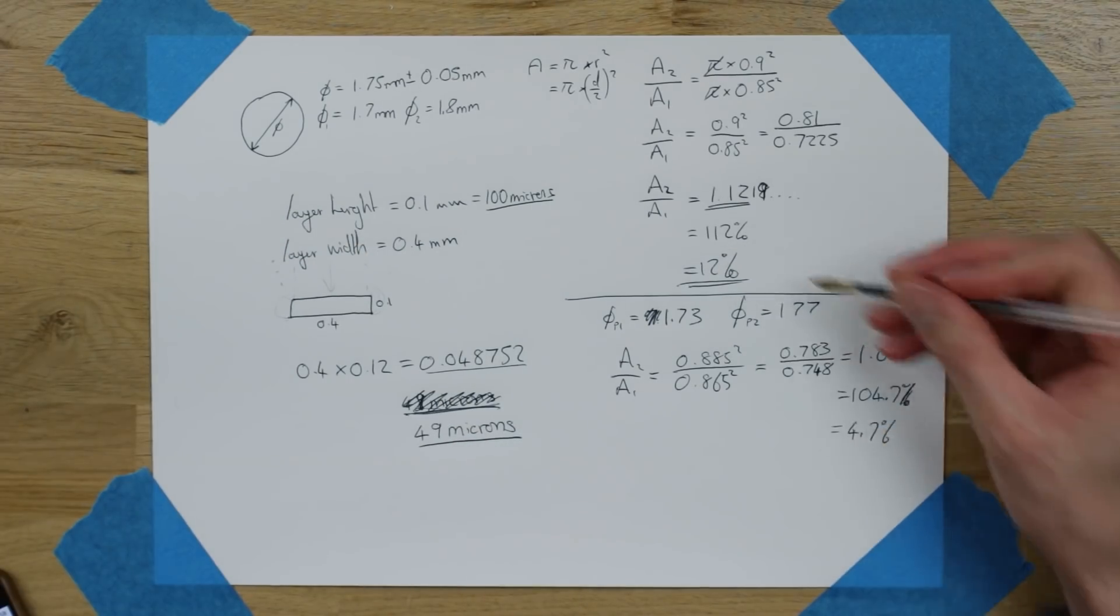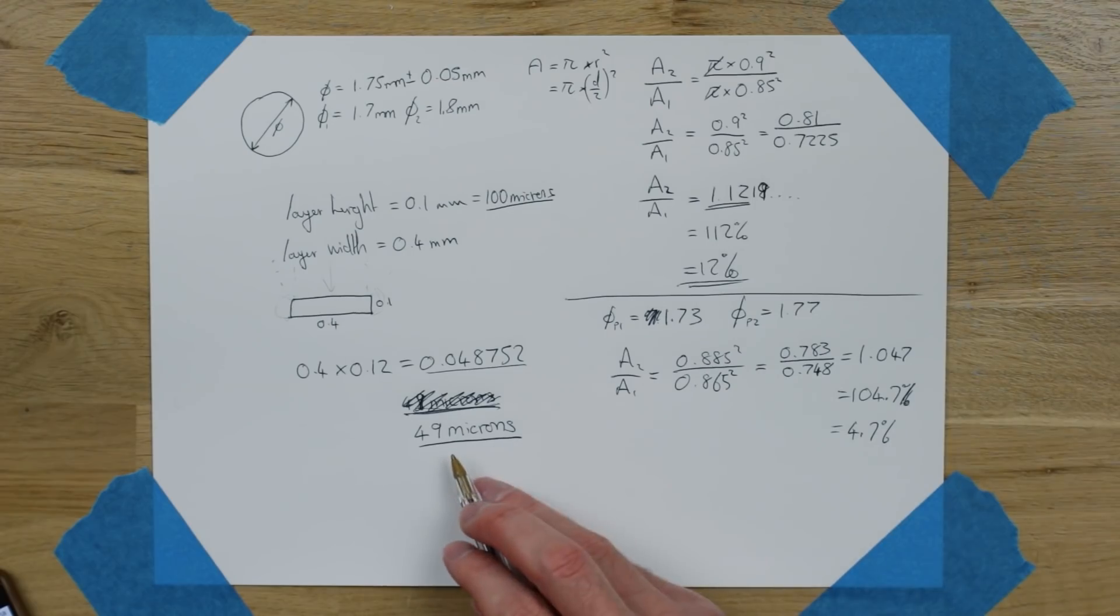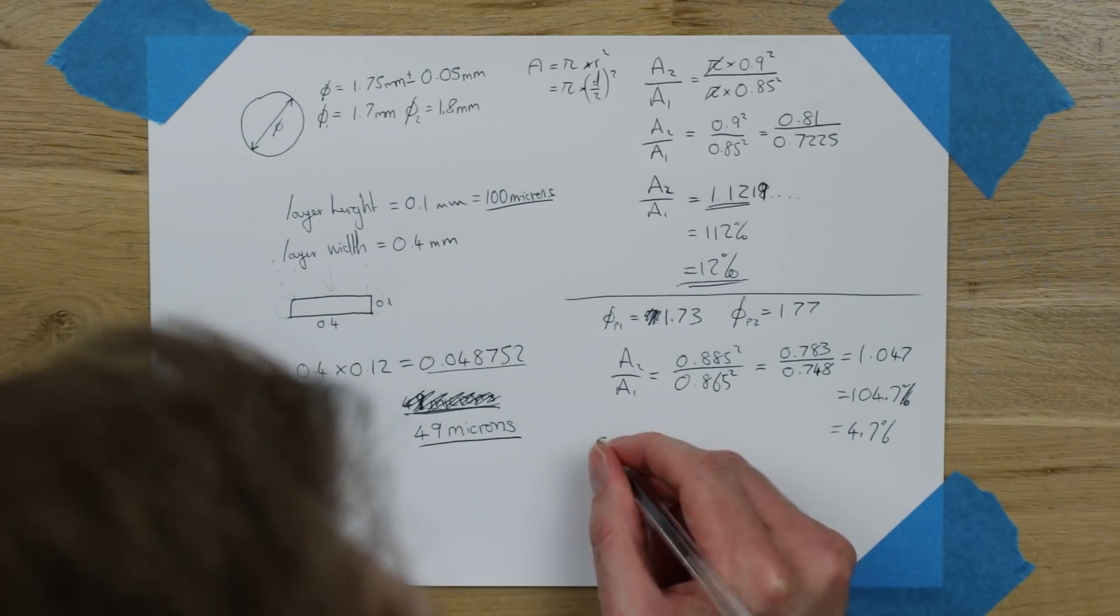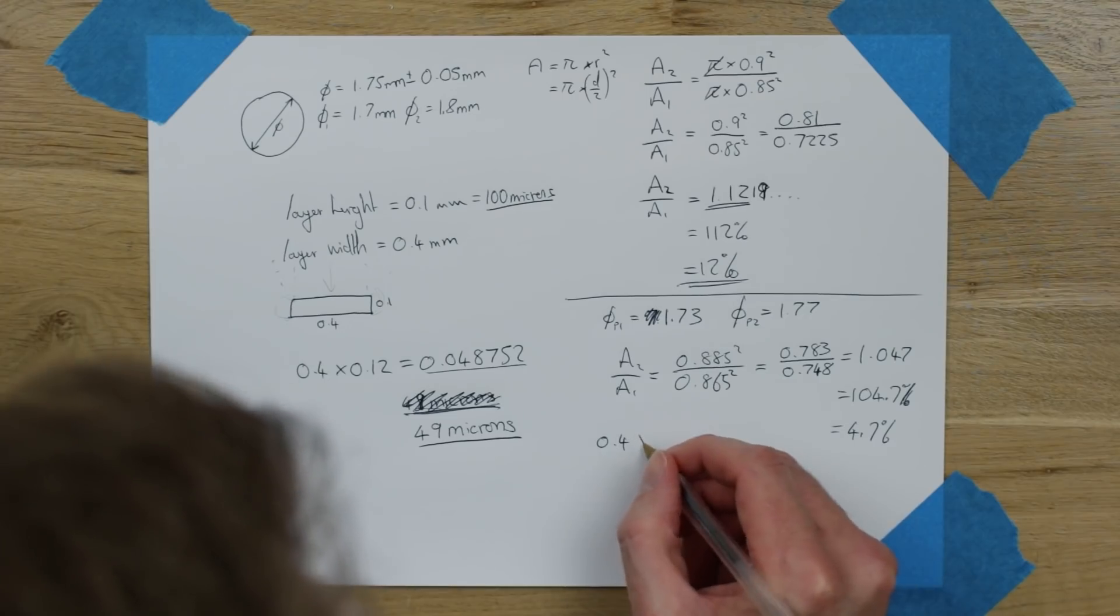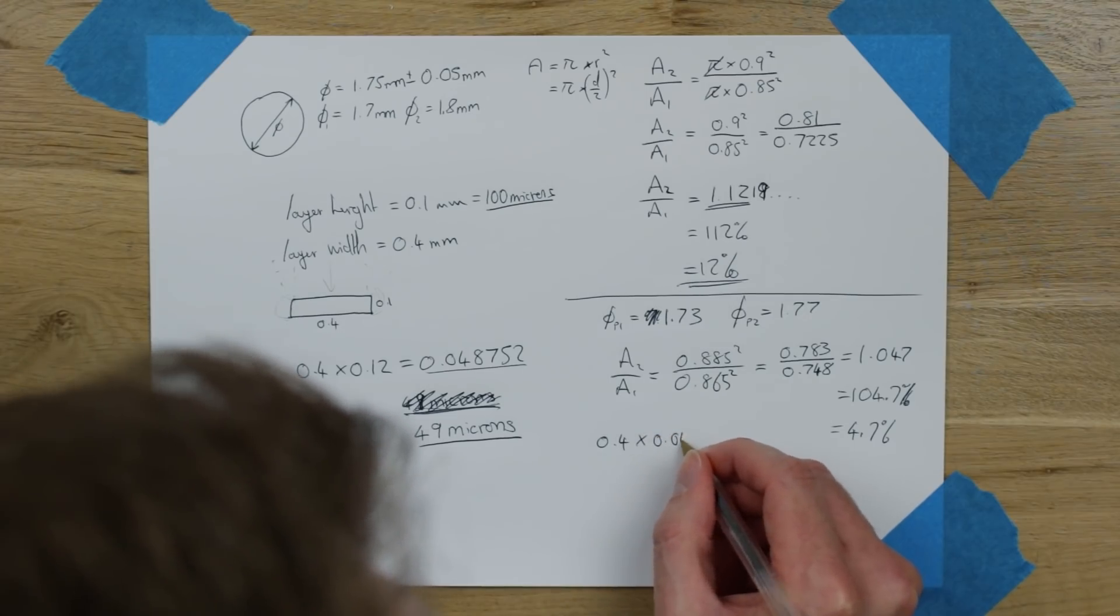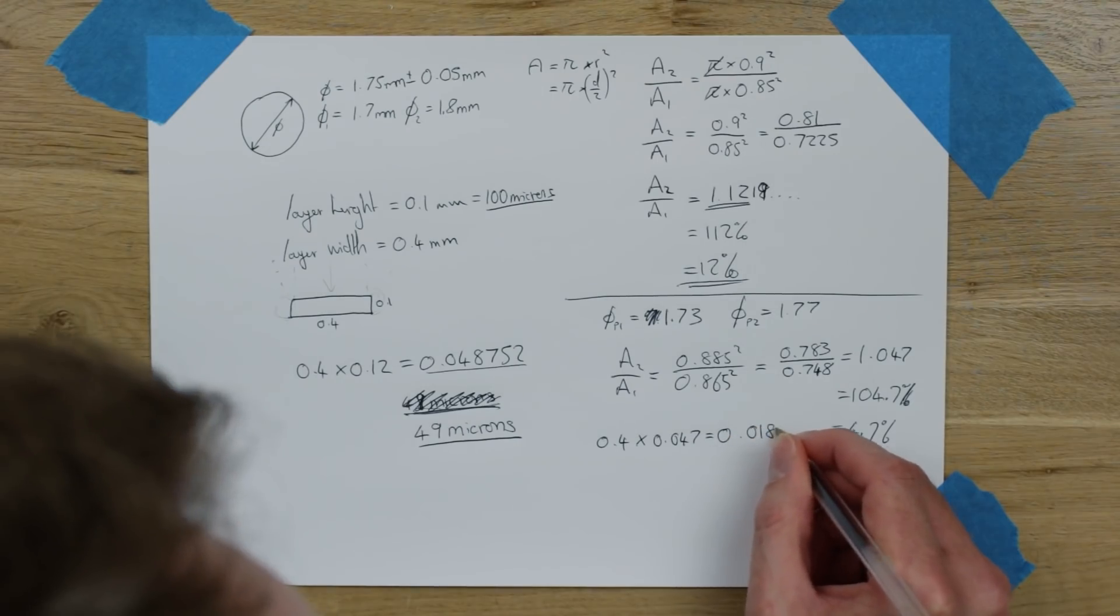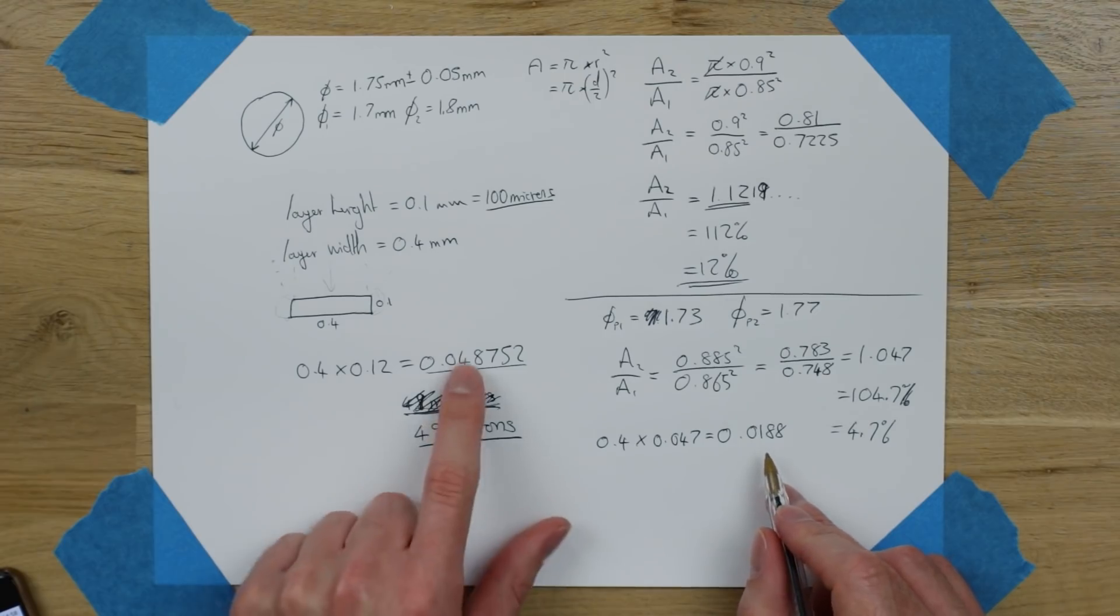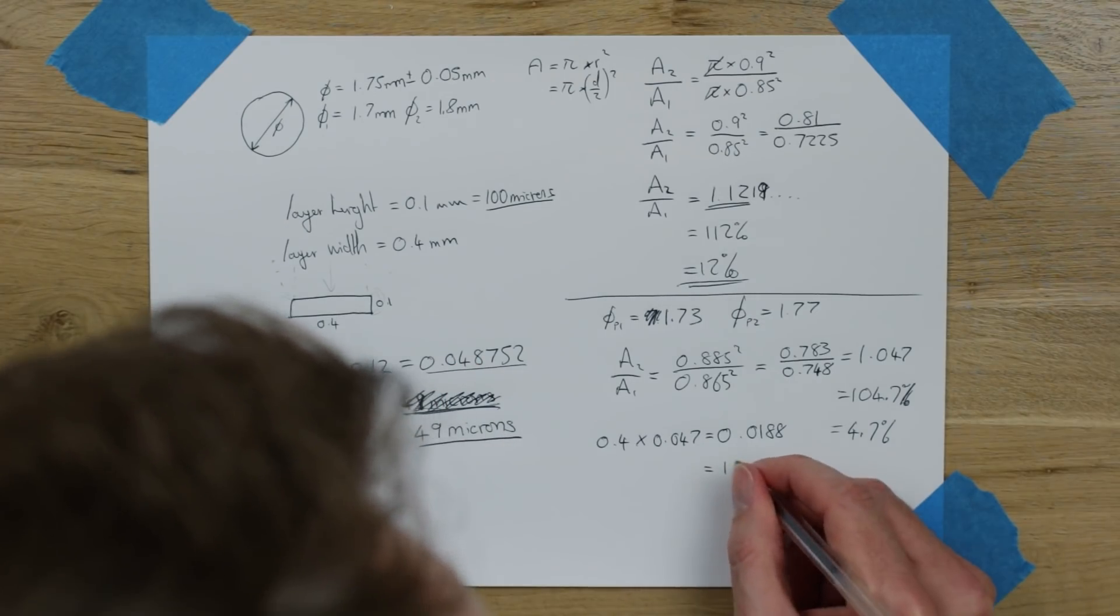That's quite a big reduction from 12% to 4.7%. I wonder how that looks when we took the actual layer height like this. So again, let's use the layer of 0.4 width. And let's say this is 4.7%. So times by 0.047. And that gives you a layer change of 0.0188. That is a lot smaller than that. So what's that in microns? Well, that's about 19 microns.